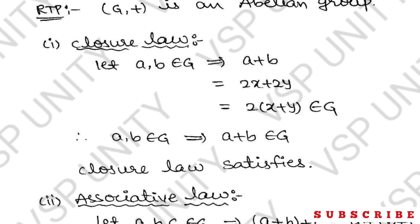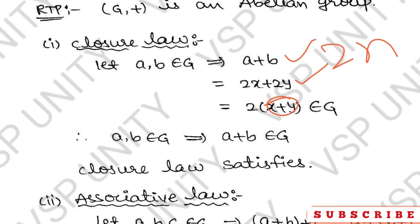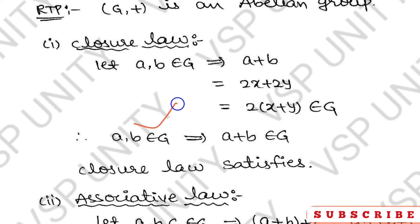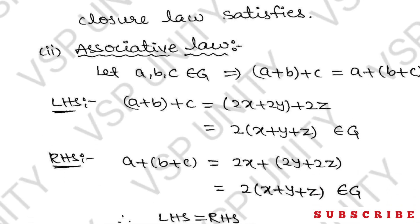First, closure property. Let a, b belong to G. Then a + b = 2x + 2y = 2(x + y), which is also of the form 2n, so it belongs to G. Therefore a, b ∈ G implies a + b ∈ G. Closure satisfied.